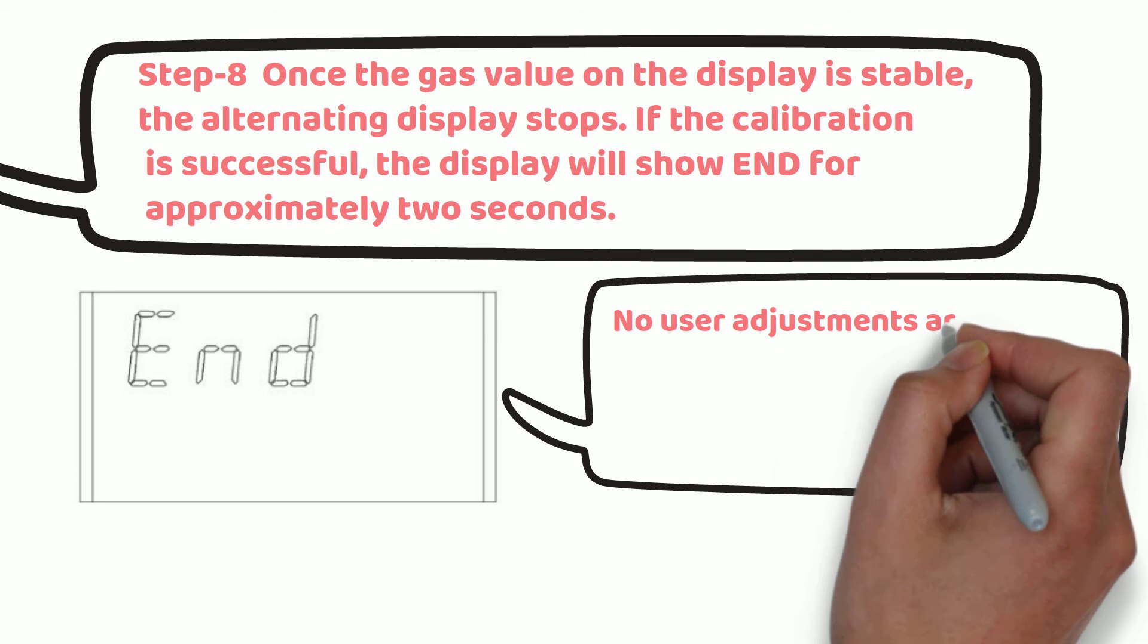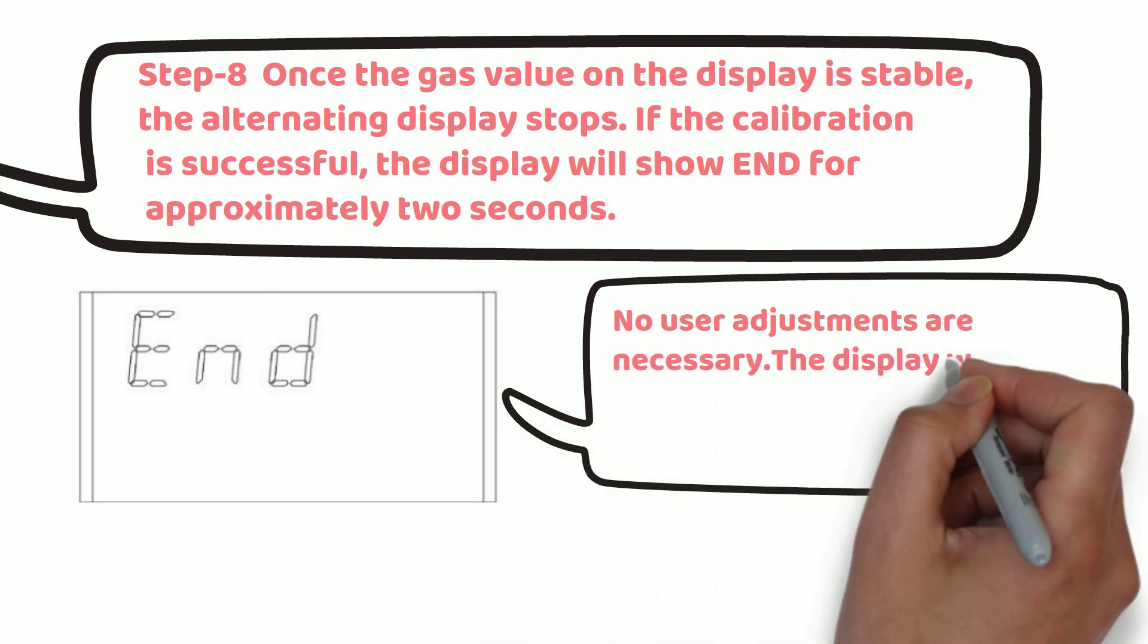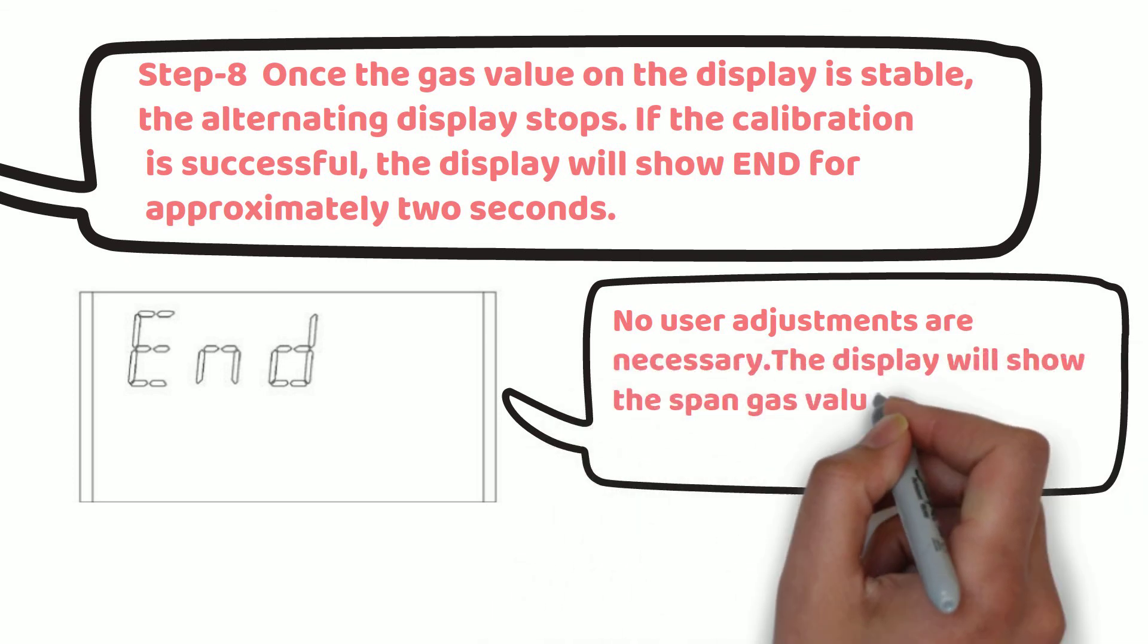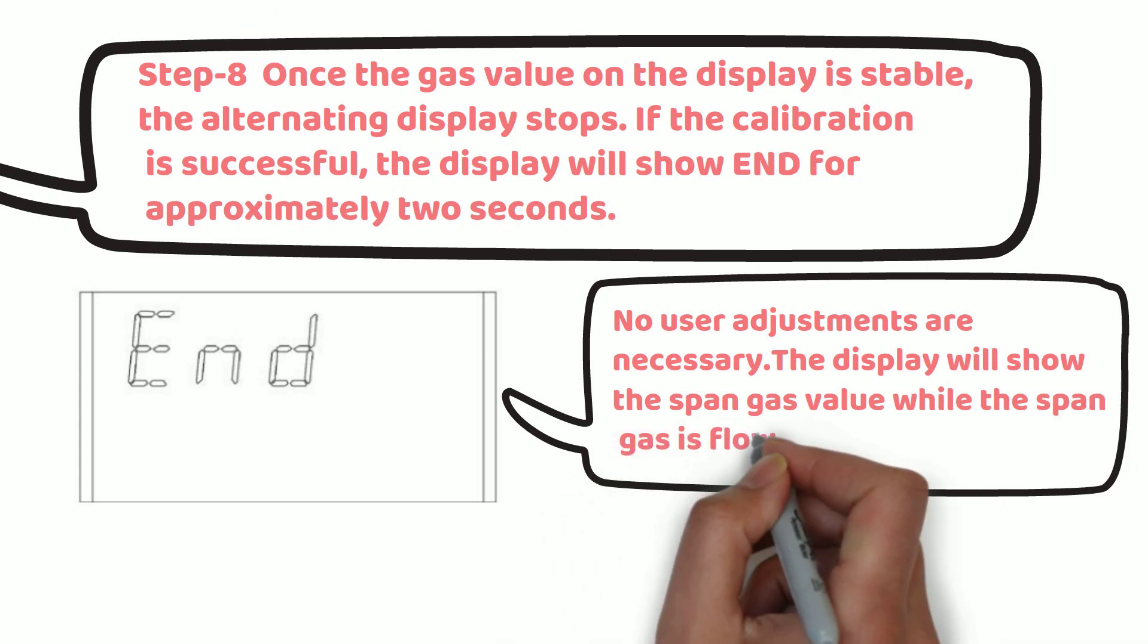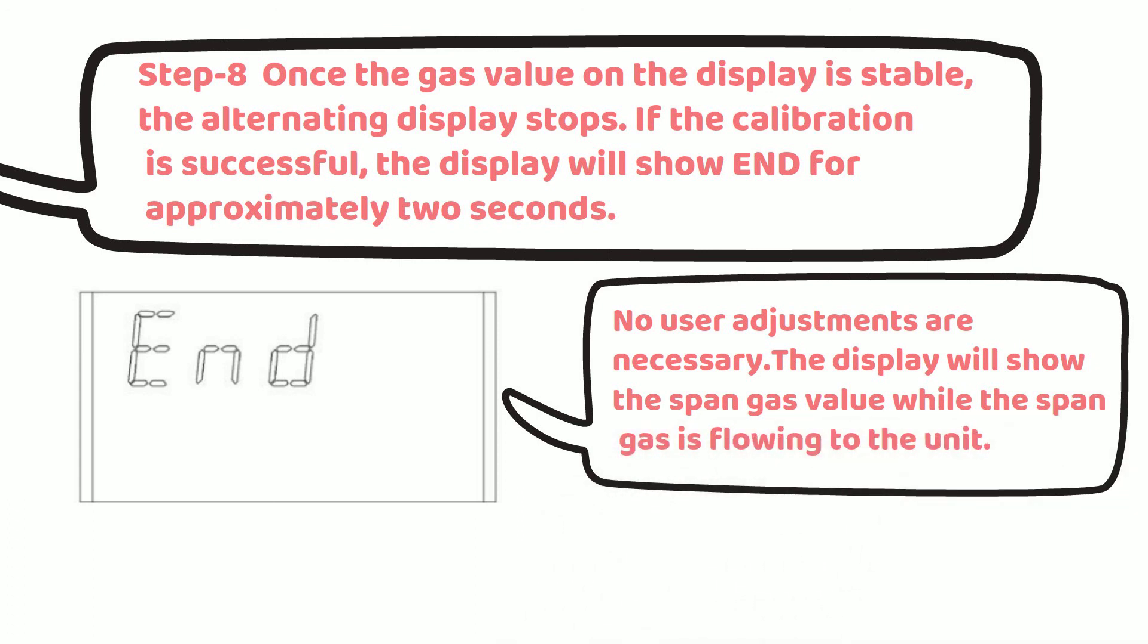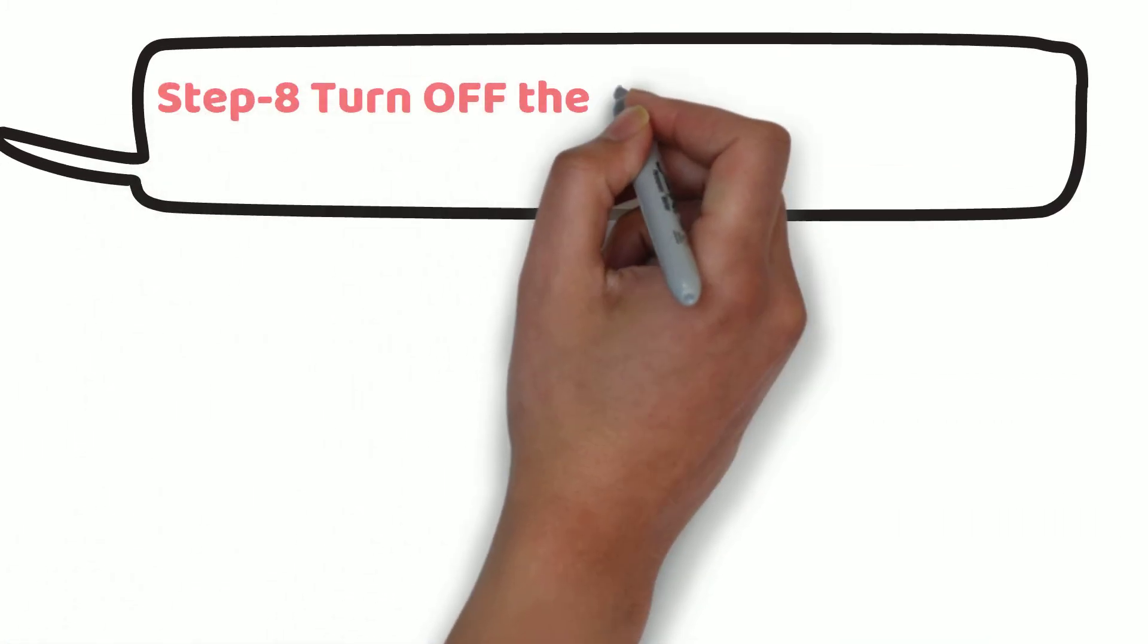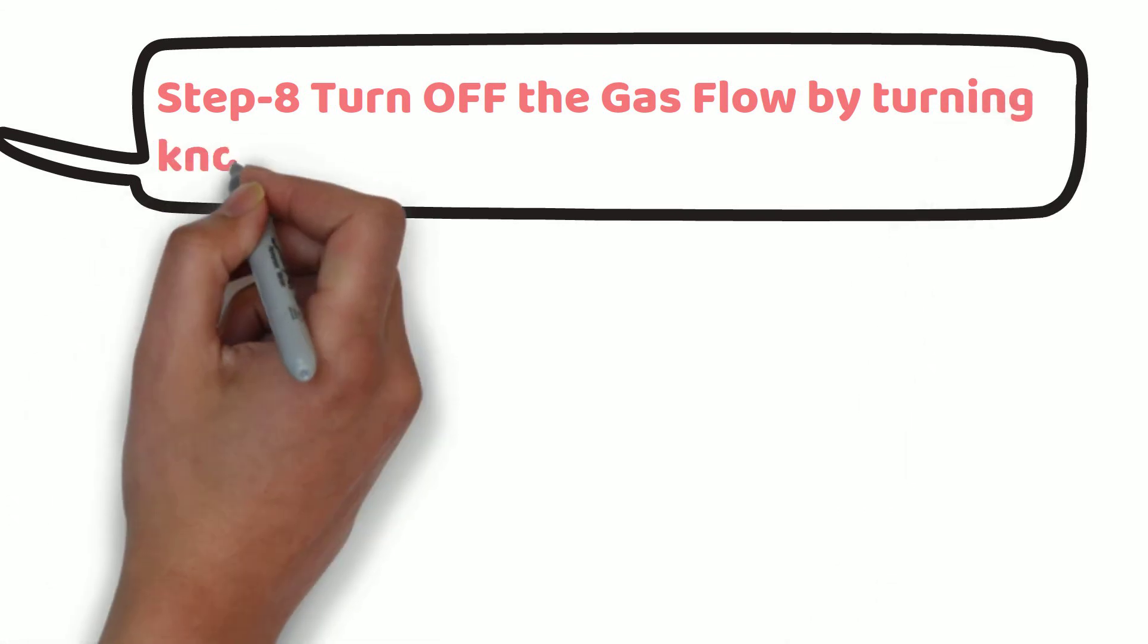Both zero and span calibration does not require any user adjustment. If the calibration is not successful, then cal fault message appears on the screen. In this case, you need to do recalibration. When end message appears on the screen, turn off the gas flow by turning knob on the flow regulator.